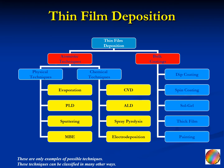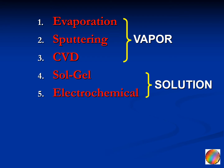Another way to classify the thin film synthesis techniques is to classify them as vapor techniques, in which the thin film is made in a gaseous medium, or solution techniques, in which the thin film is made in a liquid medium. We will look at five main techniques that are widely used to grow or deposit thin films. Let's start with the evaporation technique, which is a vapor technique — it proceeds in a gaseous medium.